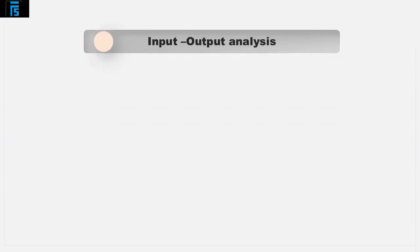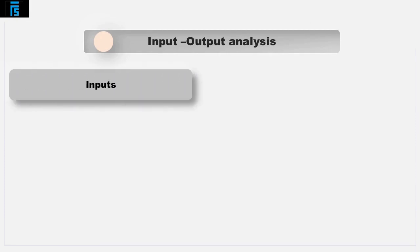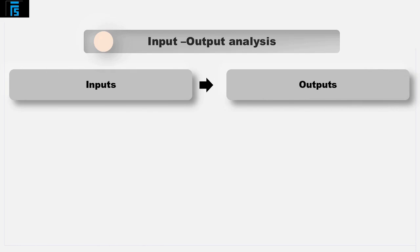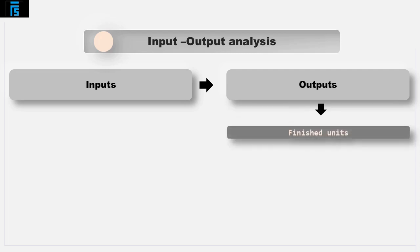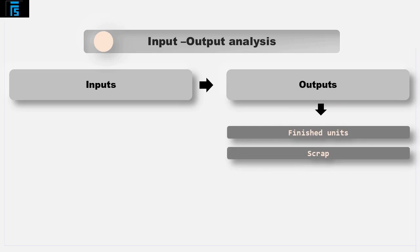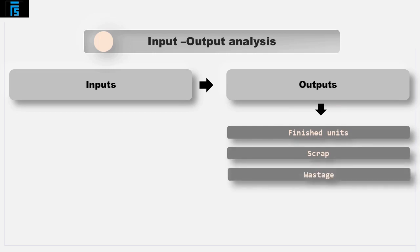Input-Output Analysis: The logic here is that all inputs to a process must be traced to outputs. This approach forces an organisation to consider all outputs from a process regardless of whether they result in a finished unit of production, a scrap item that can be disposed of, wastage or other. Thus, any waste or pollution can be tracked on both a physical and a cost basis.